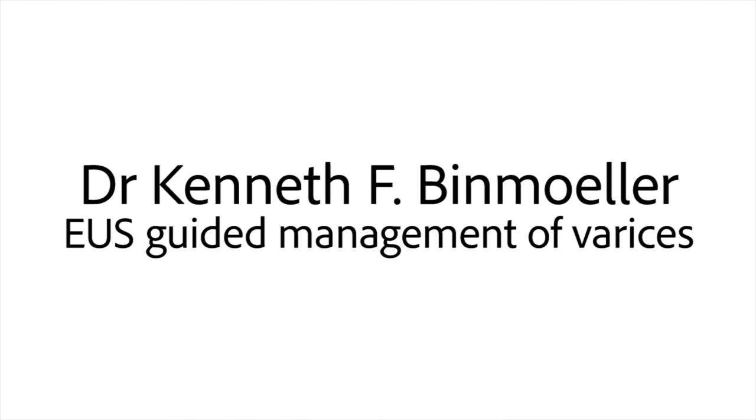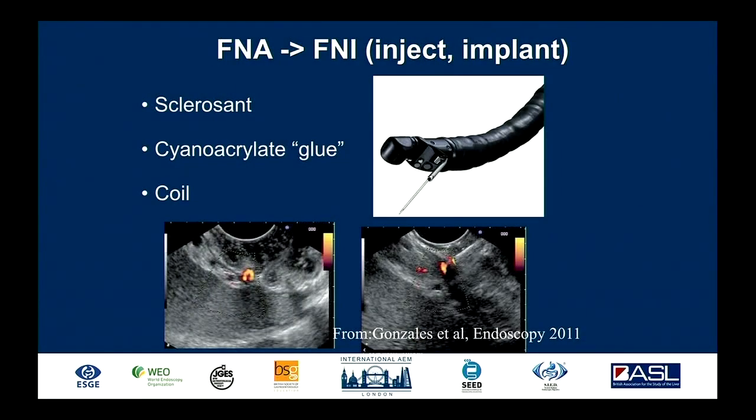Historically, we've actually been afraid of vascular structures. We're taught to use Doppler when we do endoscopic ultrasound to identify vessels that we want to avoid when we do our FNA. Now we're intentionally targeting vessels and applying therapy — a change in mindset. It's really a natural evolution of FNA, something we're all very comfortable with and perform routinely. We're just switching out the A for an I now.